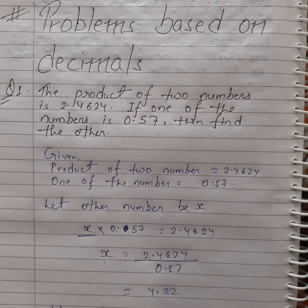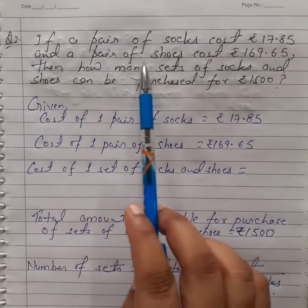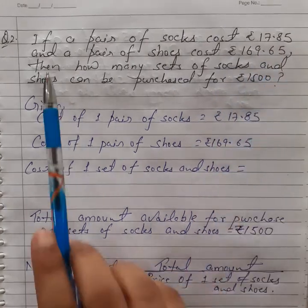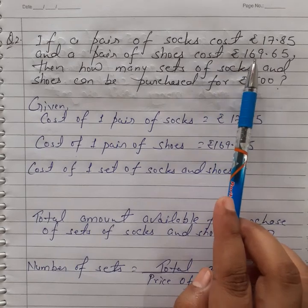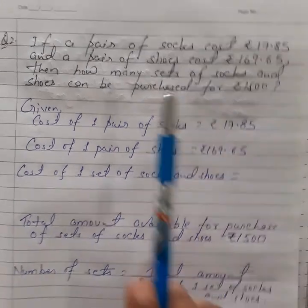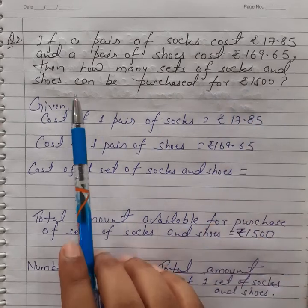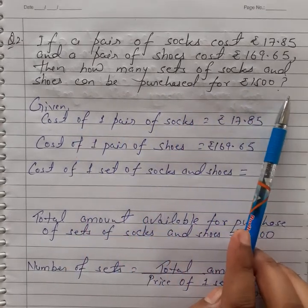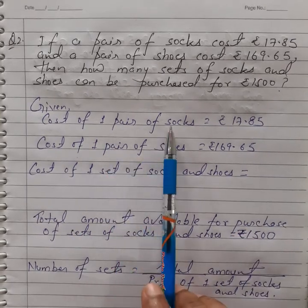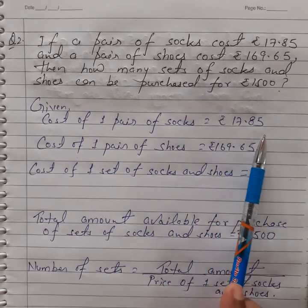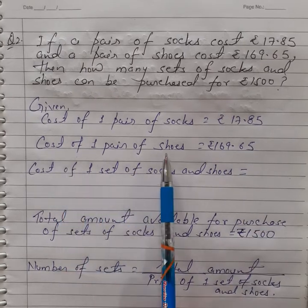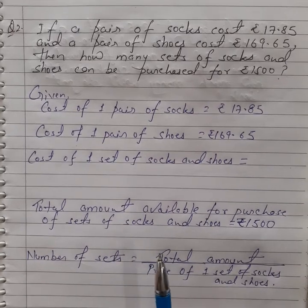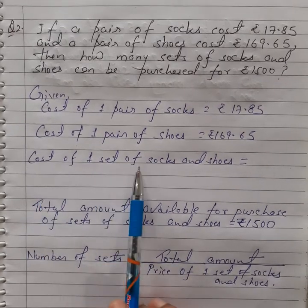The second question is: if a pair of socks costs rupees 17.85 and a pair of shoes costs rupees 169.65, then how many sets of socks and shoes can be purchased for rupees 1500? What is given? The cost of one pair of shoes is 169.65, and cost of one pair of socks is 17.85. First we find the cost of one set of socks and shoes.